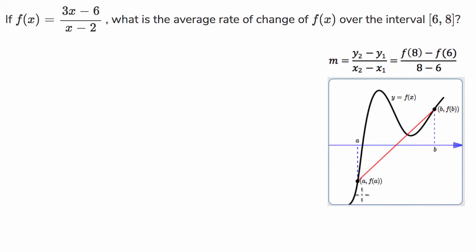Now, the average rate of change, as you can see by this diagram here, is the line that connects the two endpoints of an interval, and we work out what the gradient of that line is.